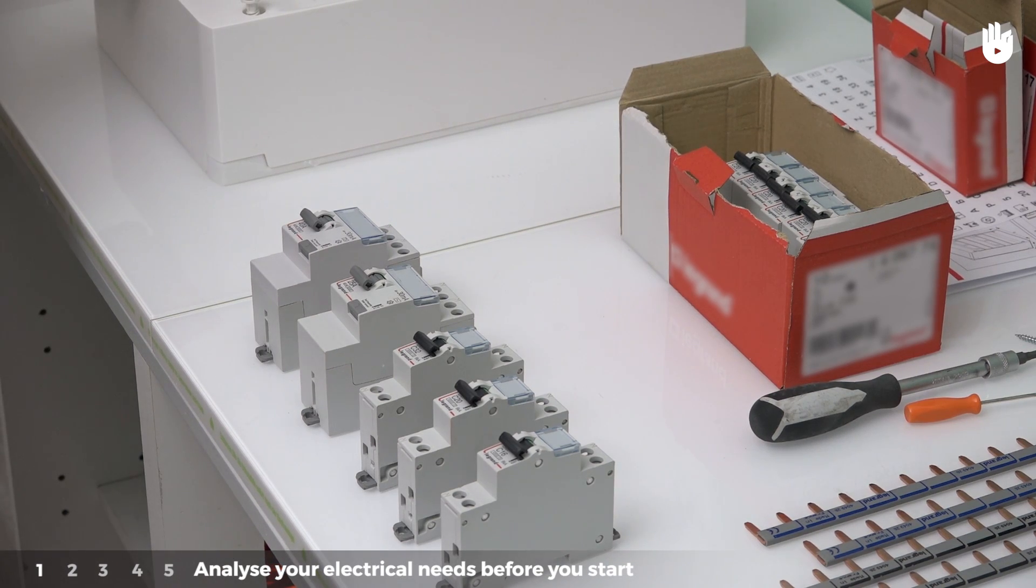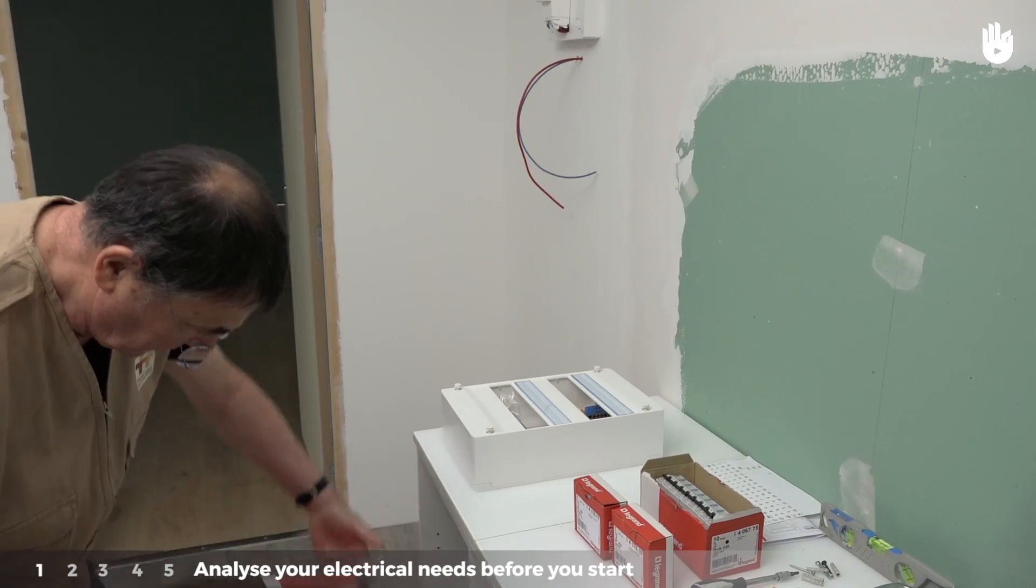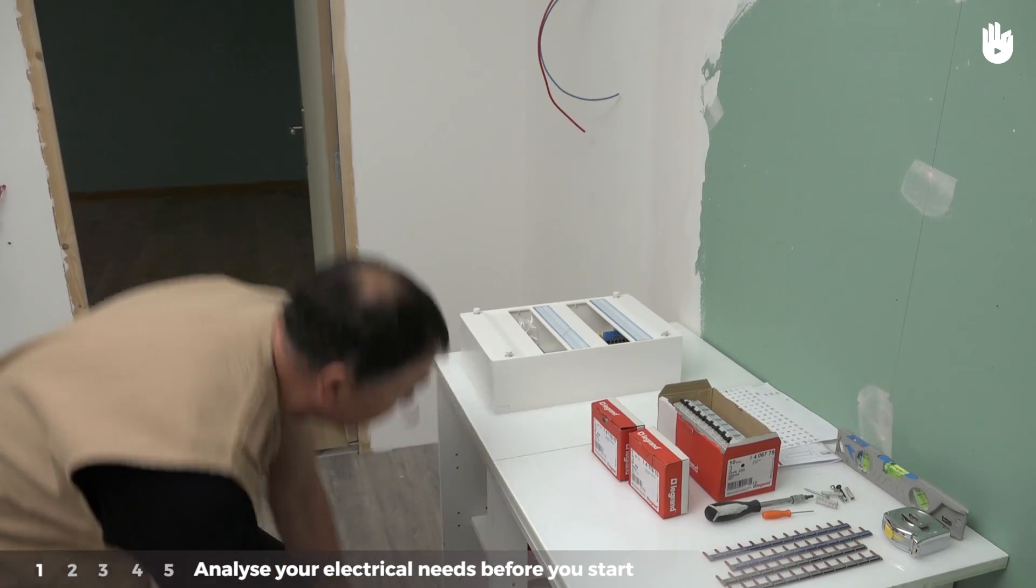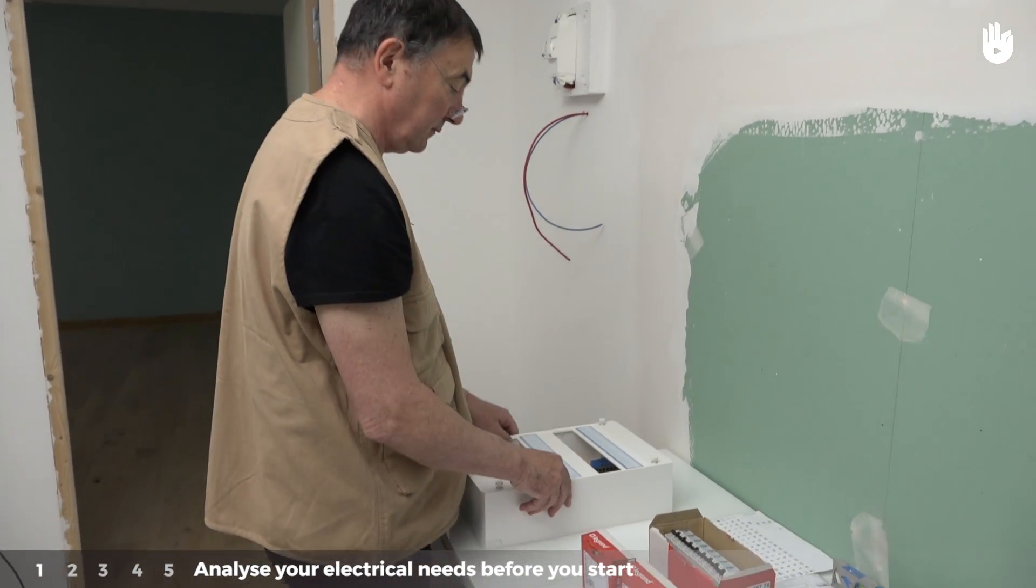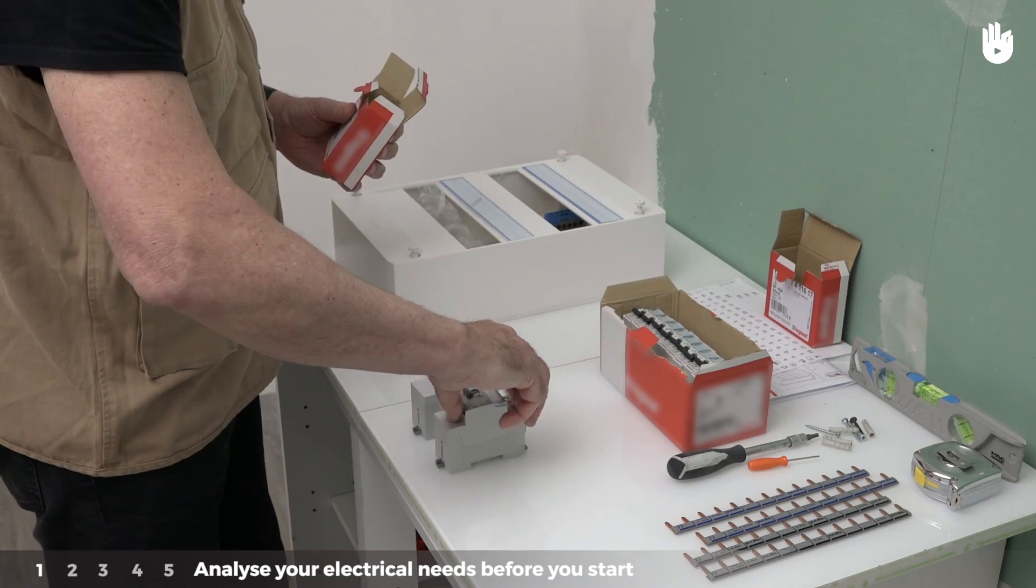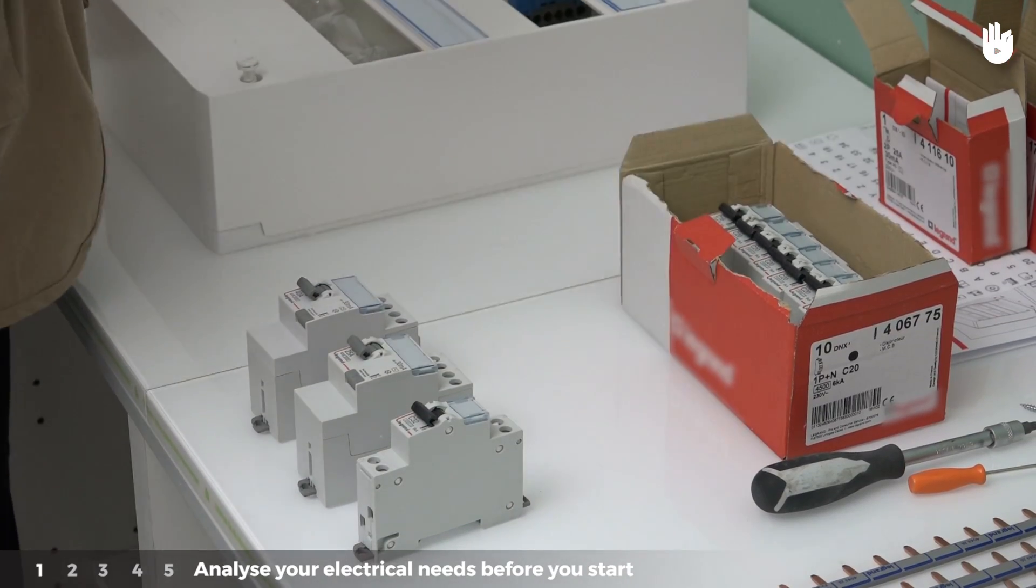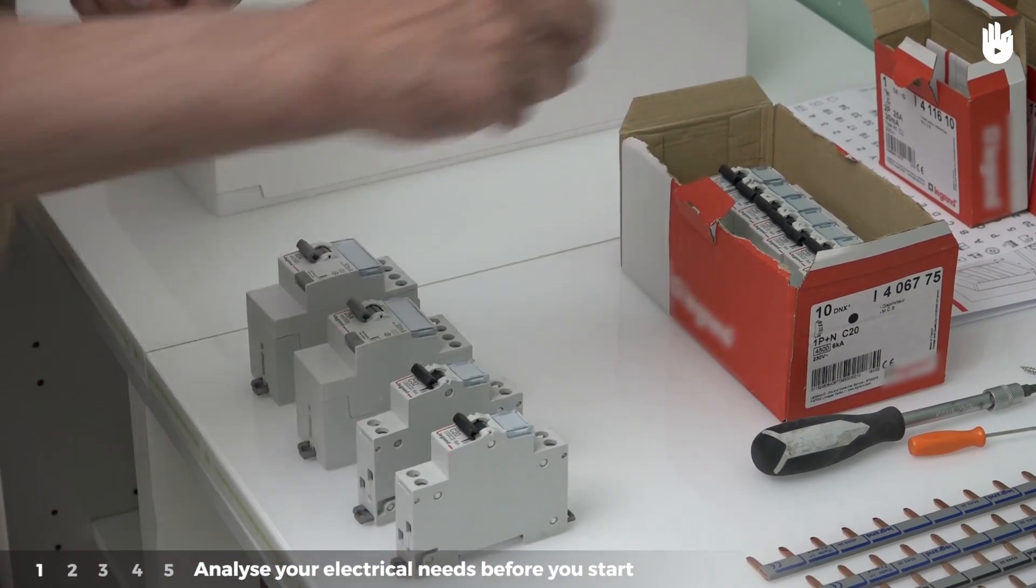Analyze your electrical needs before you start. Choose the panel in function of the size and scope of the system. Industry norms require a certain number of residual current devices depending on the surface area of the system. For a surface area of less than or equal to 35m2, install two individual circuit breakers. The number of individual circuit breakers is equal to the number of circuits that will need to be protected.